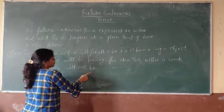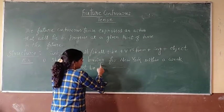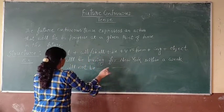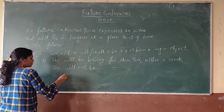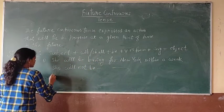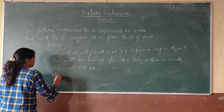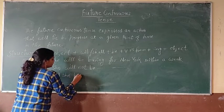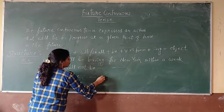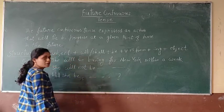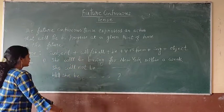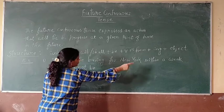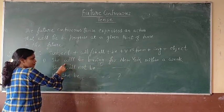For the negative form: she will not be living for New York within a way. This is the negative form. She will be living for New York within a way — this is the affirmative sentence.